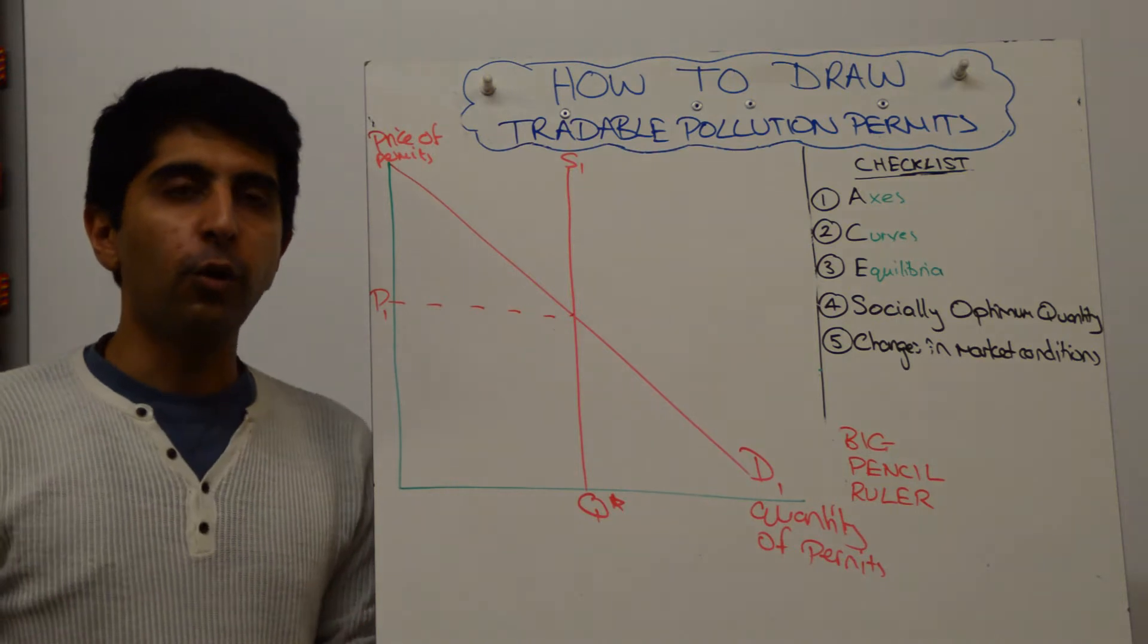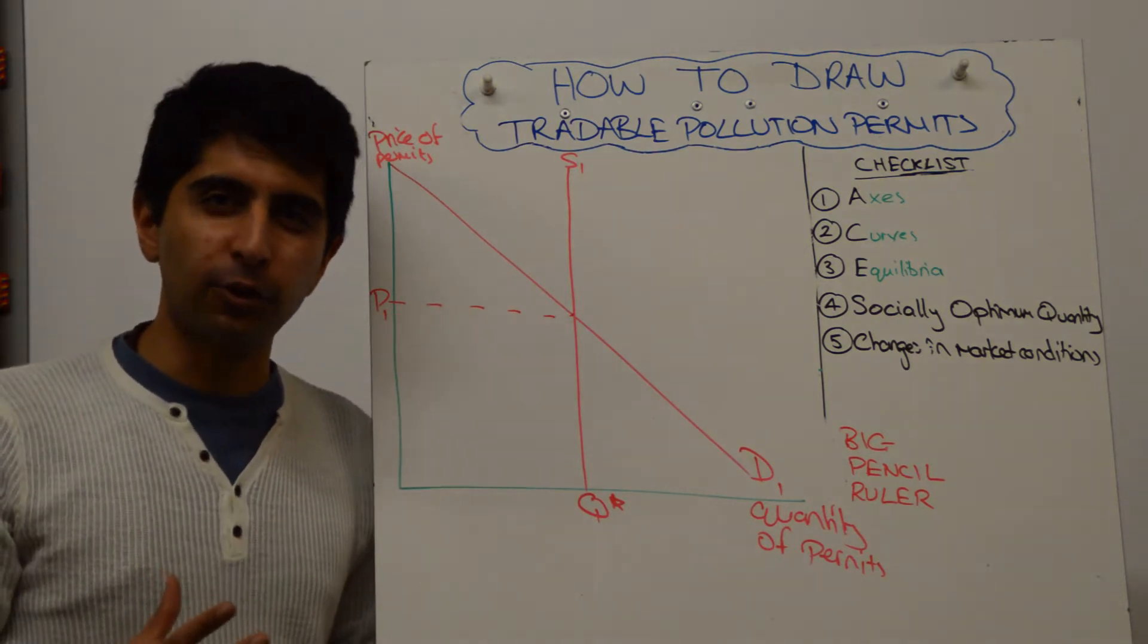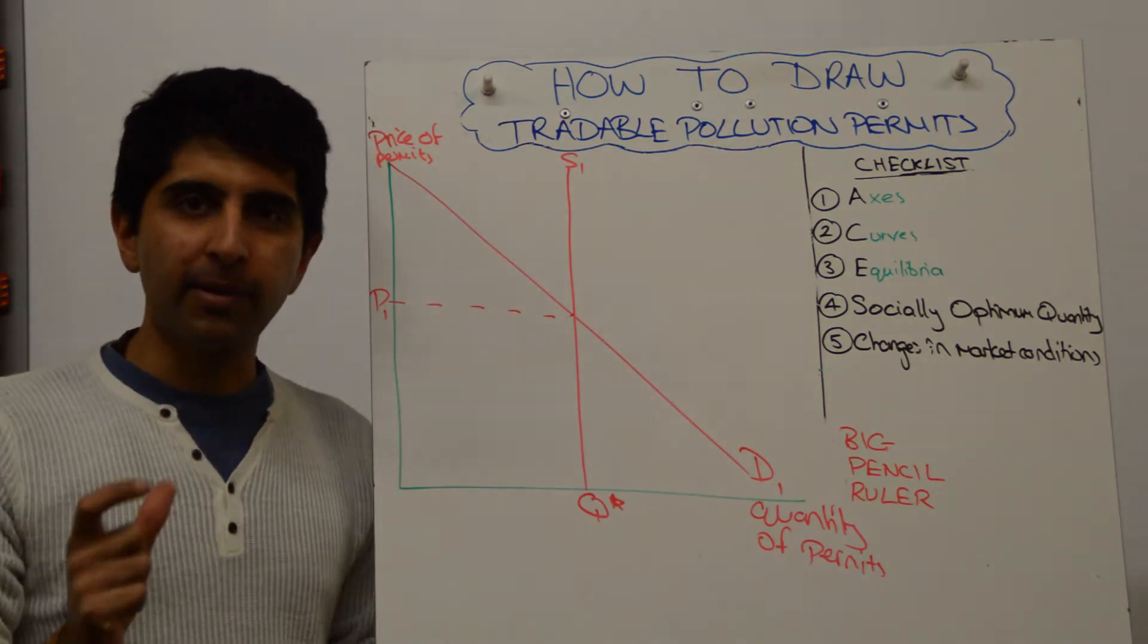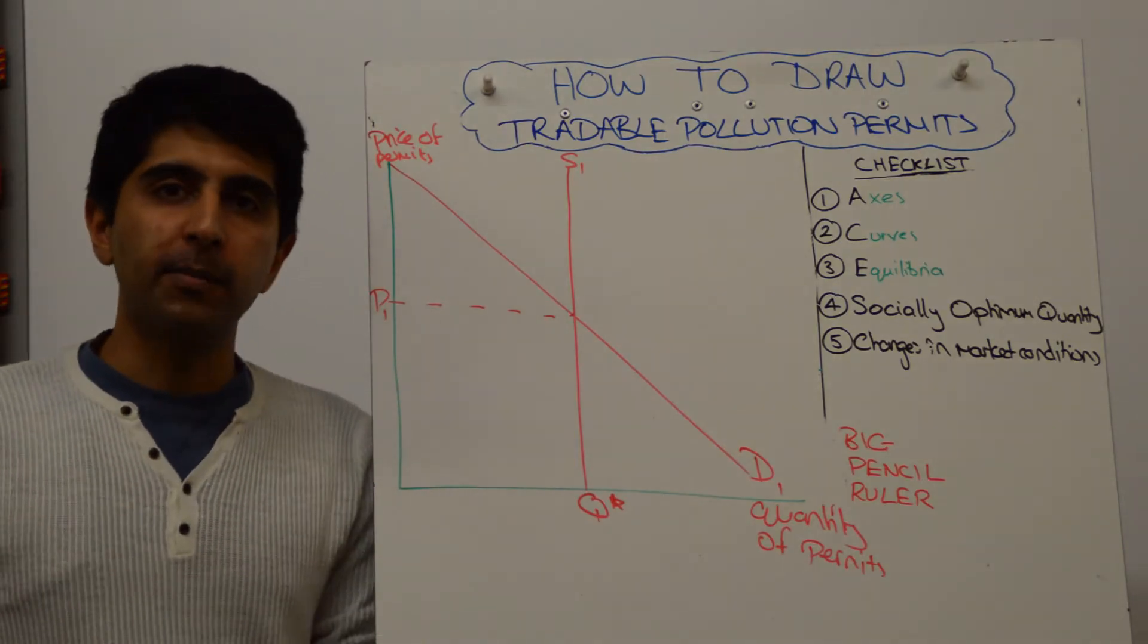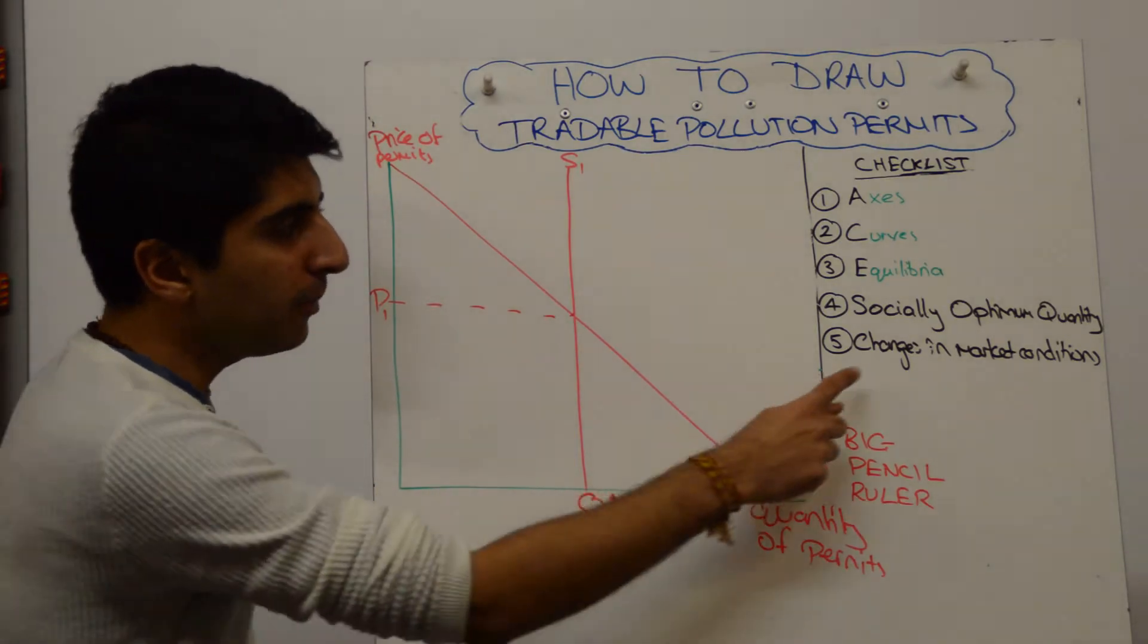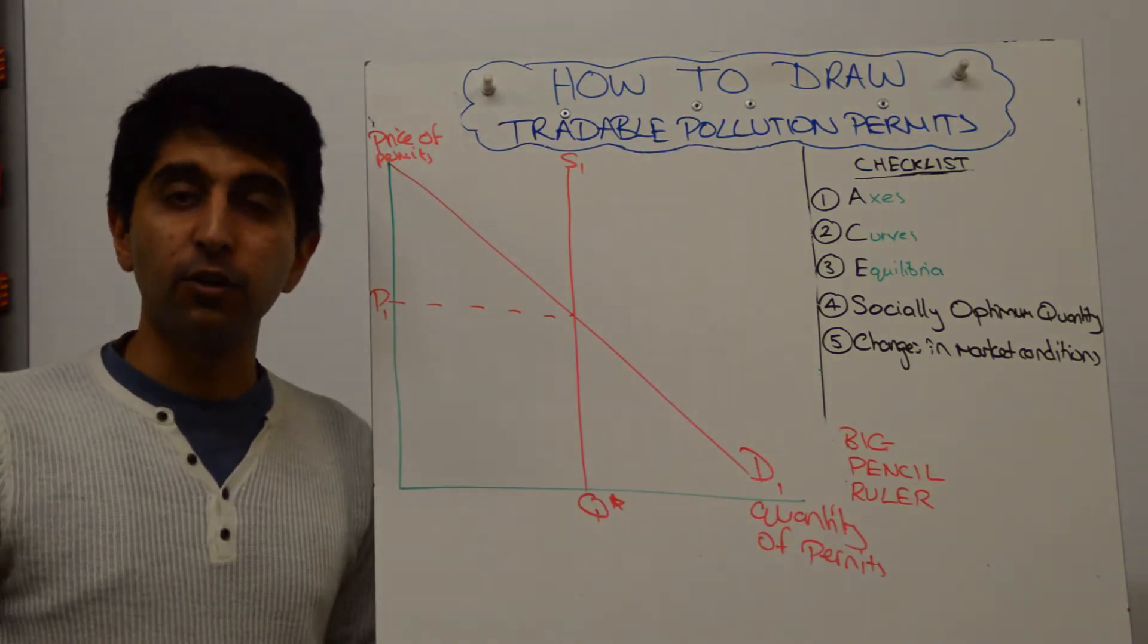But you also want to show how this is a market-based solution and how, really, apart from this initial government intervention, there is no more government intervention needed. So number five here, changes in market conditions, is also worth showing.